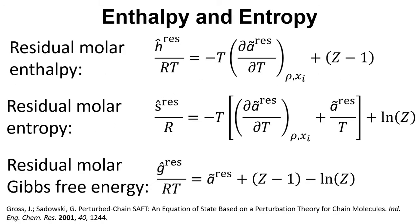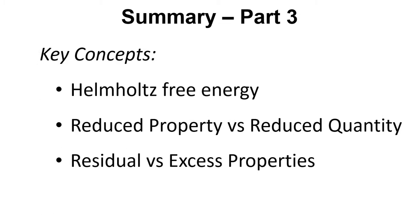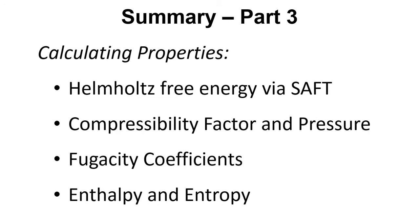Finally, we can look at enthalpy and entropy — the key thing here is that the equations involve a partial derivative with respect to T. In summary, we've looked at key concepts to do with Helmholtz free energy, reduced properties versus reduced quantities, and residual versus excess properties. We've then seen how SAFT can be used to calculate these different properties via partial derivatives of the reduced residual Helmholtz free energy.